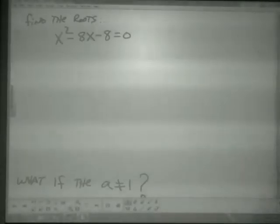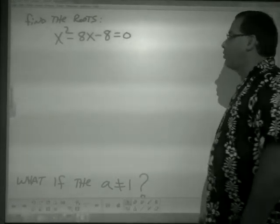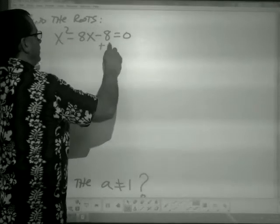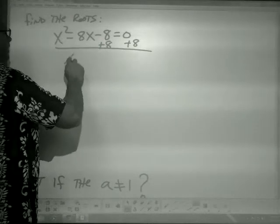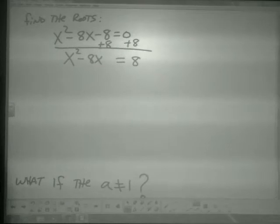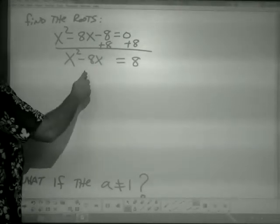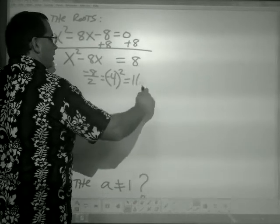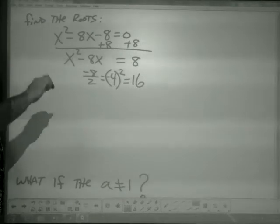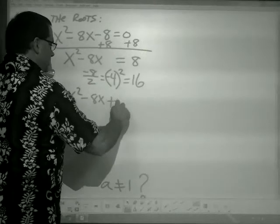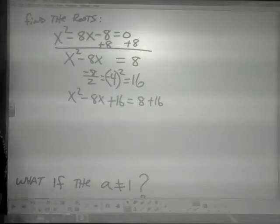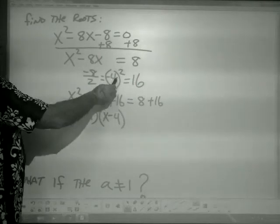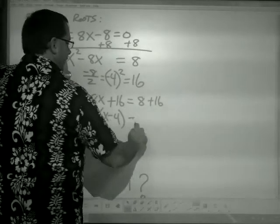Let's take a look at one more example. Find the roots — it's equal to zero, factors of 8 with a difference of 8 don't exist, so move the 8 to the other side: x² - 8x = 8. Take half of the b term: negative 8 over 2 is negative 4. Square it: 16. Add 16 to both sides: x² - 8x + 16 = 8 + 16 = 24.